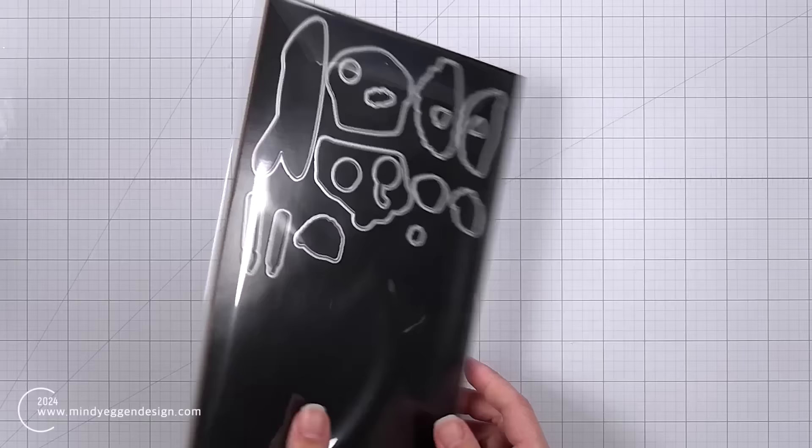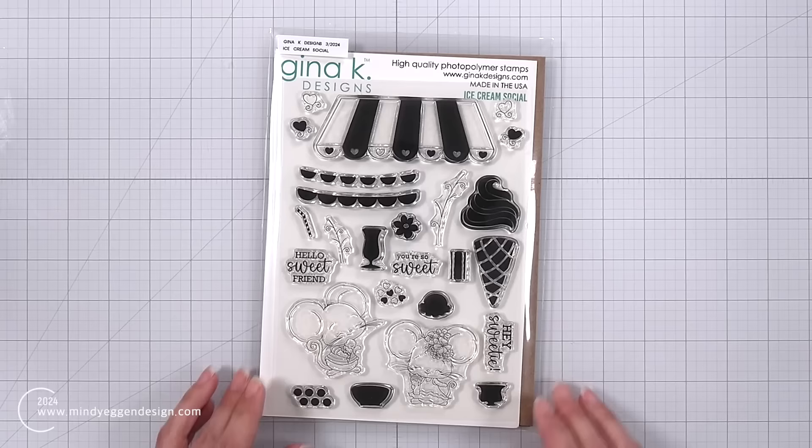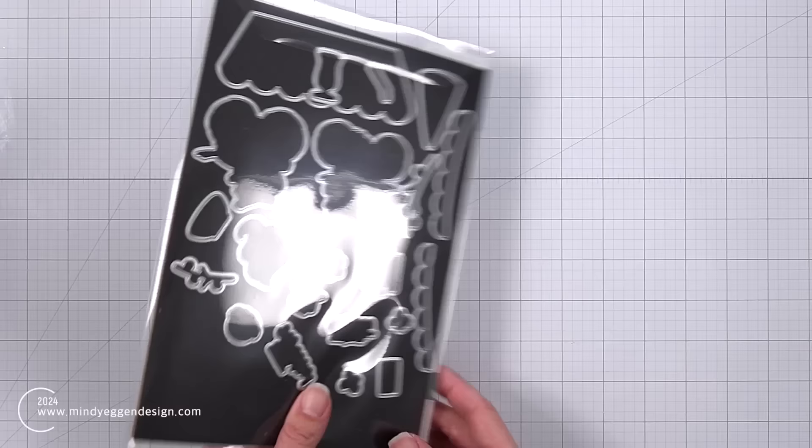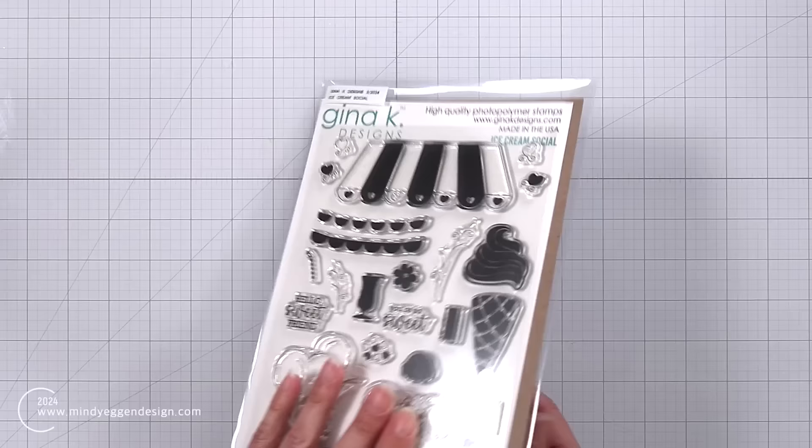So I really do highly recommend picking up these coordinating dies when you are making your purchase. It makes life a lot easier and they come in really handy for techniques. So as you can see, there's a lot of really great new products including this one. Look at these adorable mice. I cannot wait to color in these adorable mice. Look at their chubby little cheeks. So this is a brand new set Ice Cream Social.